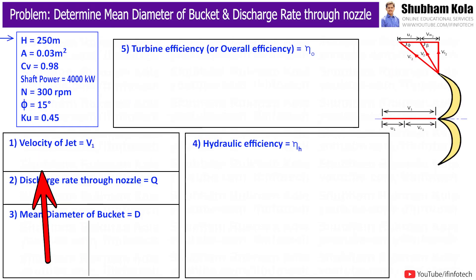Here first of all, to calculate velocity of jet of turbine, V1 is given by formula CV multiplied with under root of 2gh, where value of H, i.e. available net head provided in given data which is equal to 250 m, coefficient of velocity CV equal to 0.98, and the numerical value for acceleration due to gravity g is 9.81 m per second square. So, this gives me the value of velocity of jet of turbine as 68.63 m per second.